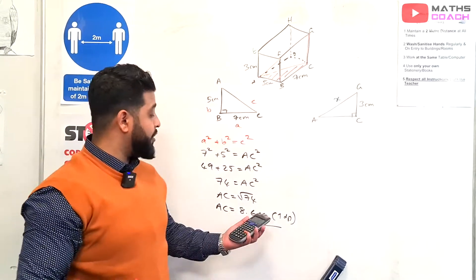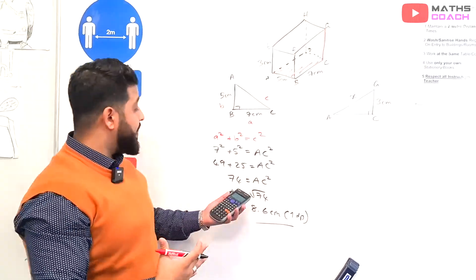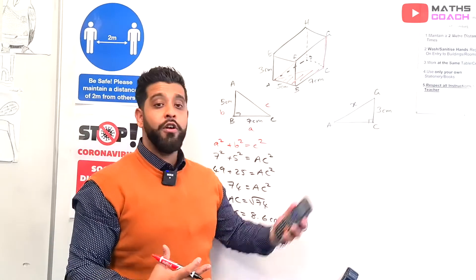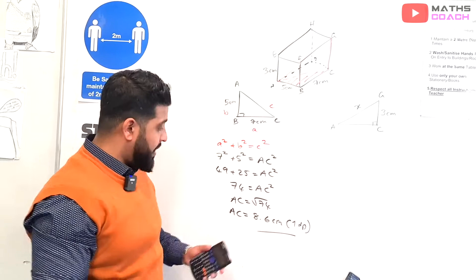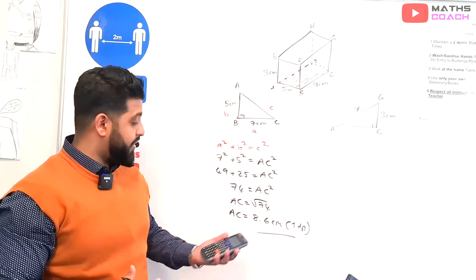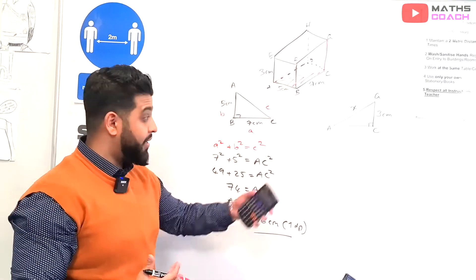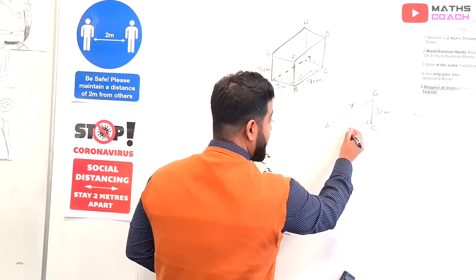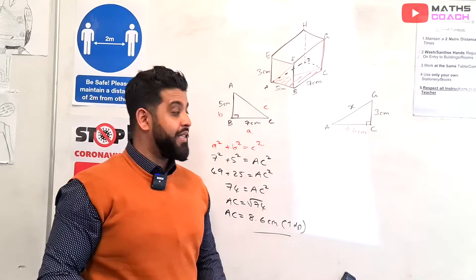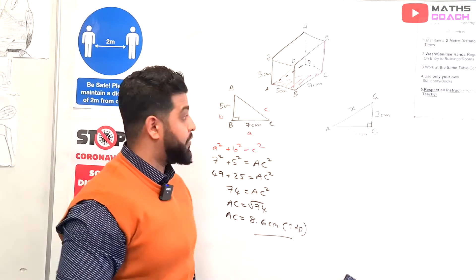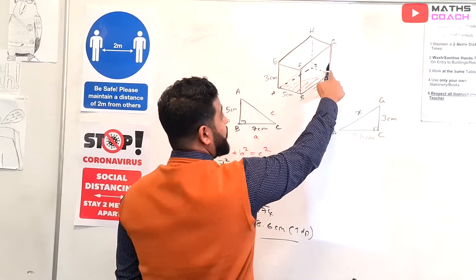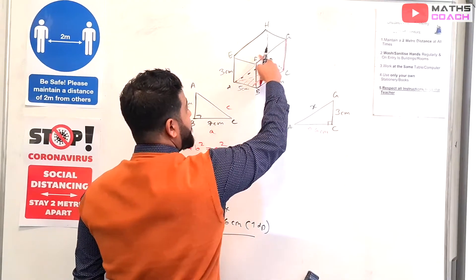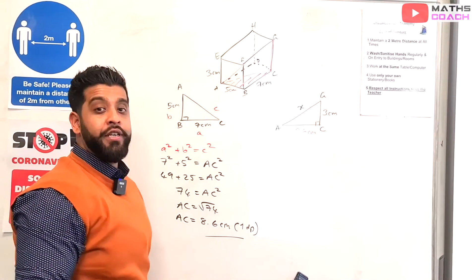Now, you don't have to round it. If you want to keep your answer more accurate, then you might want to just transfer root 74 here as well, instead of 8.6. But it won't be too much of a difference if we had rounded our answer. So 8.6 centimeters is our length of A to C, which is, once again, to remind you, across the floor. And we are working out this triangle here in our 3D shape.